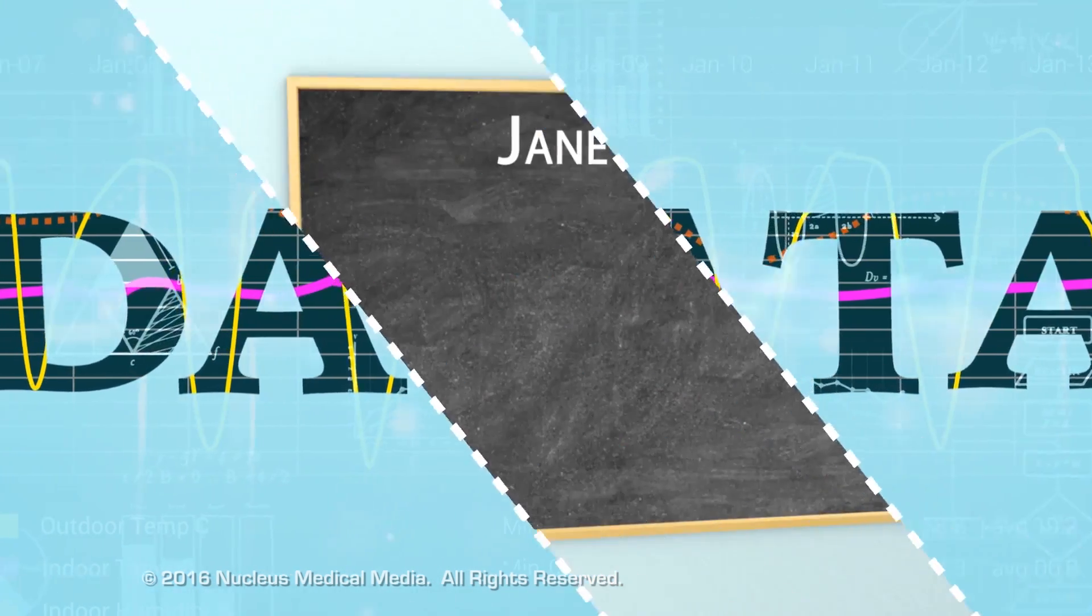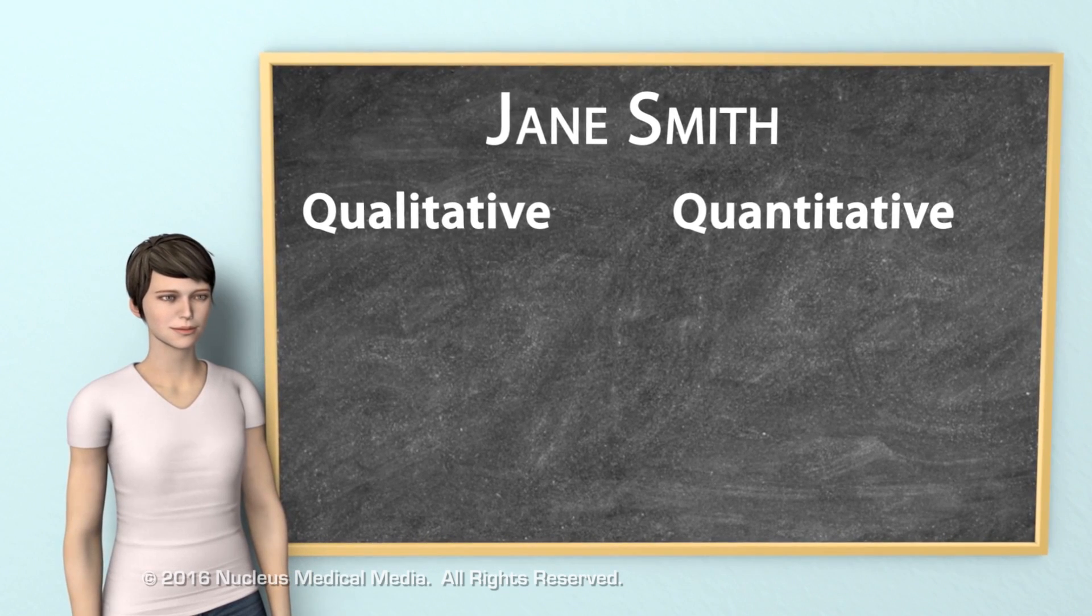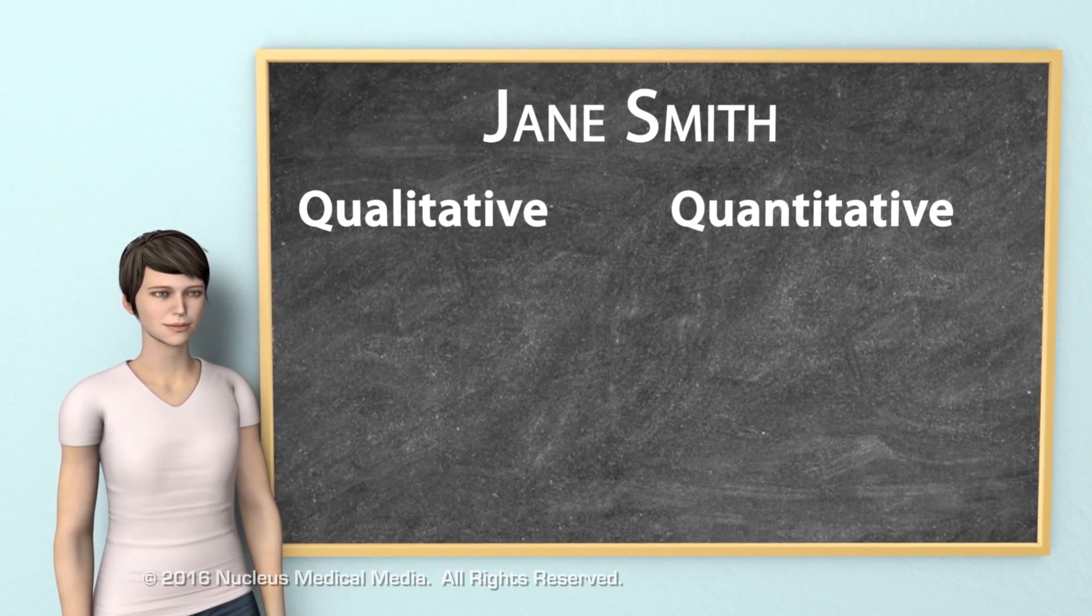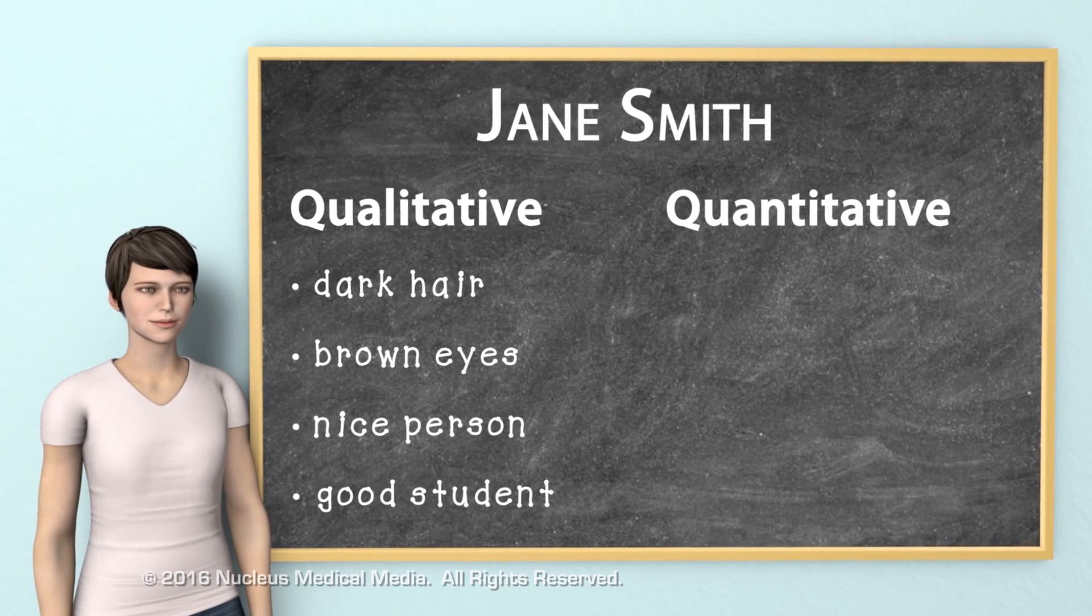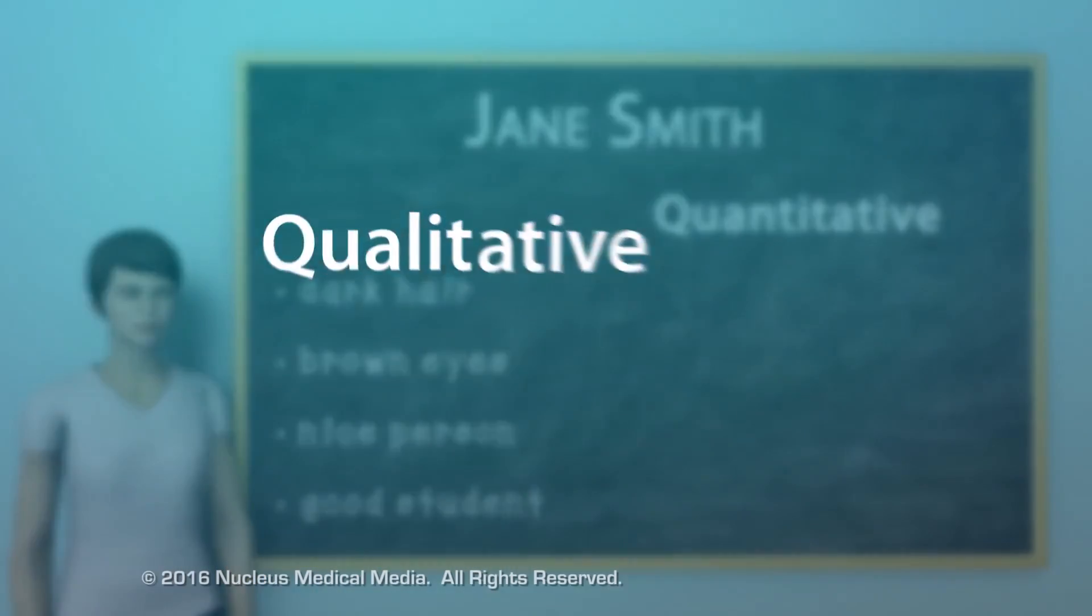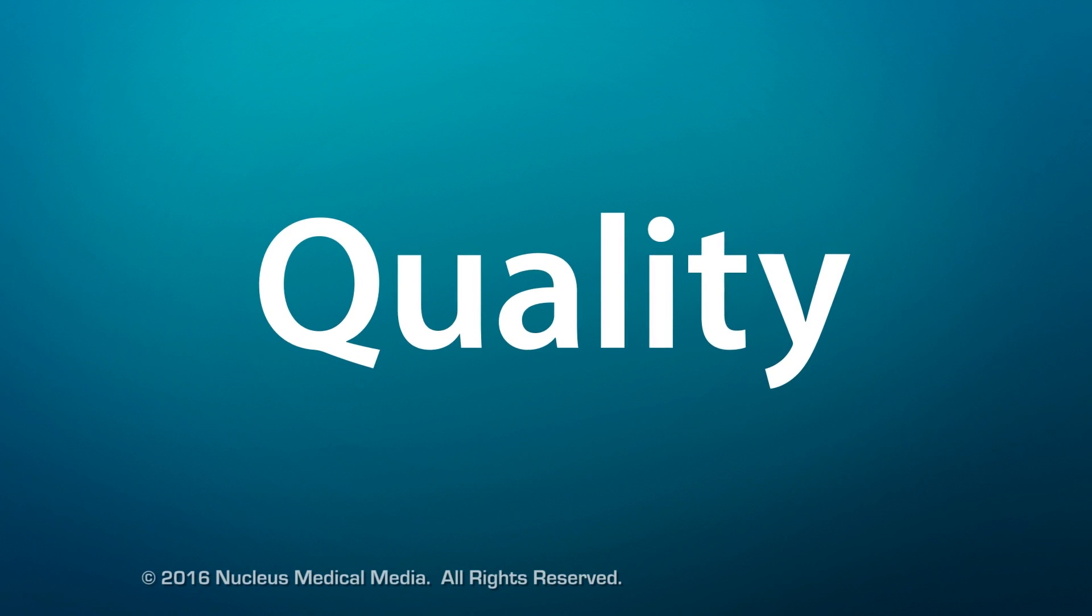The two main types of data are qualitative data and quantitative data. Qualitative data includes descriptions that do not contain numeric values. Notice the word qualitative has quality embedded in it.